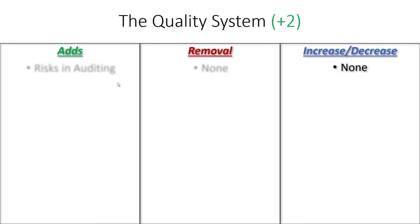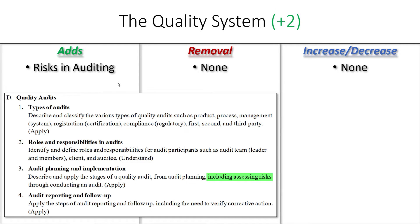The quality system pillar is also pretty similar in terms of its update. No topics are being increased or decreased in cognition level, and nothing's being removed. The only addition is risk management in quality auditing — specifically, adding the thought process around assessing risks in your audit planning. To me, that just goes along with the whole theme that risk management is even more important than it used to be.